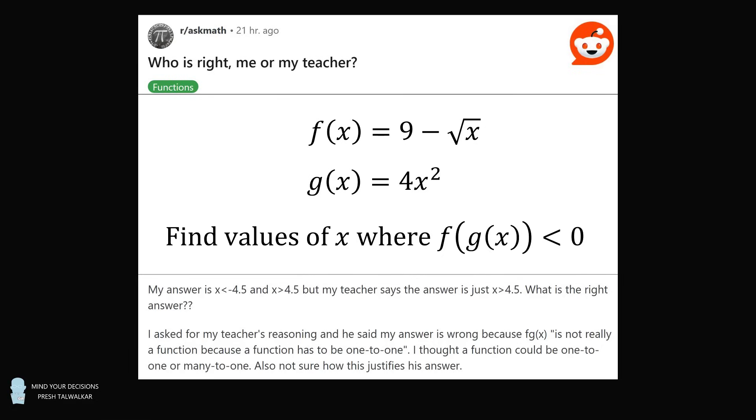f of x is equal to 9 minus square root of x, g of x is equal to 4x squared. Find values of x where f of g of x is less than 0. The student came up with the answer that x is less than minus 4.5 and x is greater than 4.5. But the teacher says the answer is just x is greater than 4.5. What's the right answer?